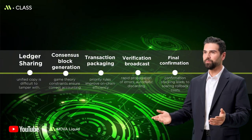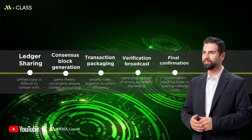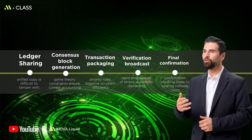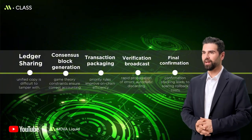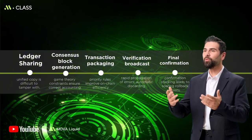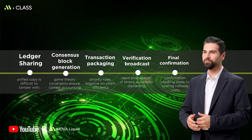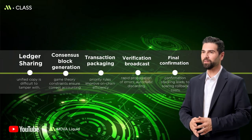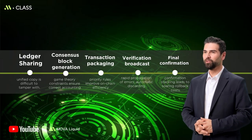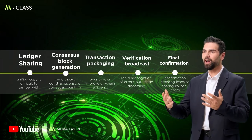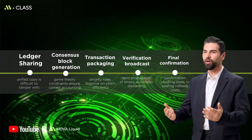Imagine the execution path as a line. Nodes first verify the validity of transactions locally. The block producer packages the transaction based on priority, such as fee and size. The new block is immediately broadcast to the entire network, and other nodes perform secondary verification, discarding any non-compliant blocks. Subsequently, more blocks are added on top of this, and the cost of rollback increases exponentially.